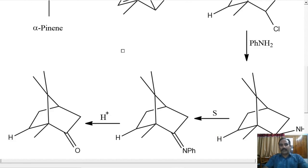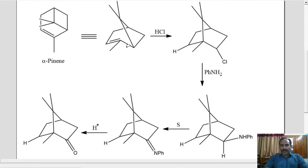So, let us go over this synthesis once again. Alpha-pinene on treatment with dry HCl produces bornyl chloride, which on treatment with aniline produces isobornyl aniline, which on heating with sulfur produces bornyl anil, which on hydrolysis with aqueous acid produces camphor.